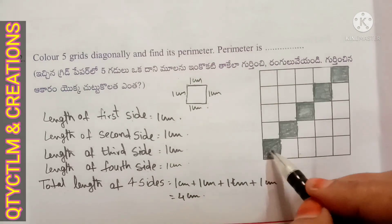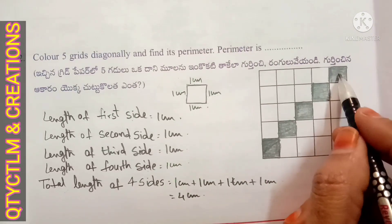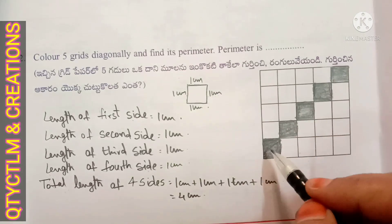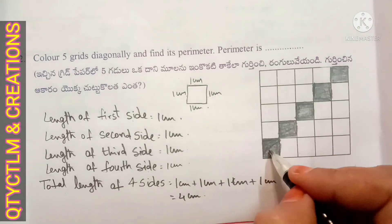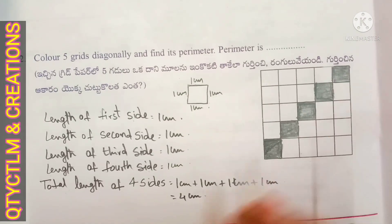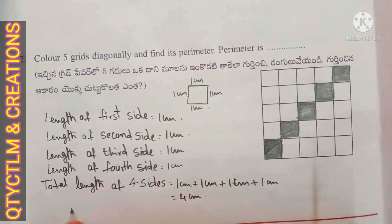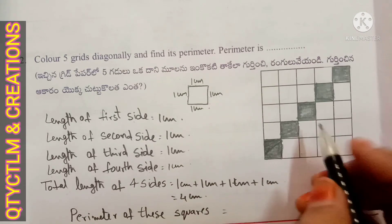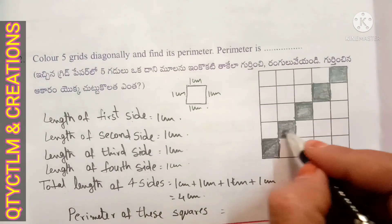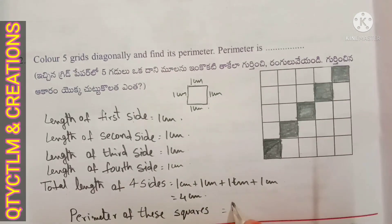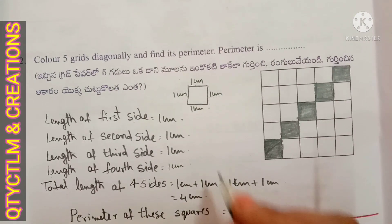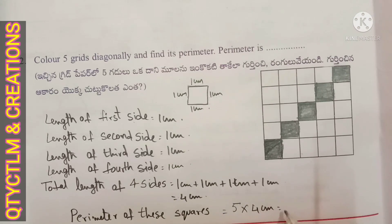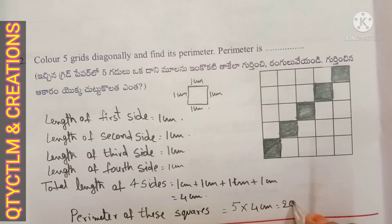So here we have 5 boxes — 1, 2, 3, 4, 5. We have 5 squares. The perimeter of each square is 4 centimeters, so 5 squares times 4 centimeters equals 20 centimeters.